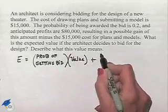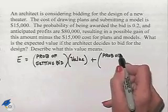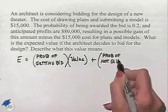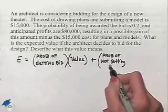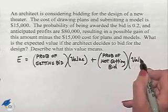We're going to add that to the probability of not getting the bid multiplied times the value associated with not getting the bid.